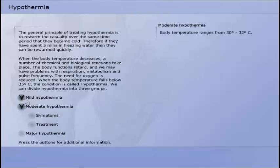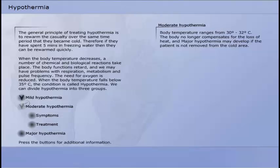When the casualty suffers from moderate hypothermia, the body temperature ranges from 30 to 32 degrees Celsius. The body no longer compensates for the loss of heat and major hypothermia may develop if the patient is not removed from the cold area.